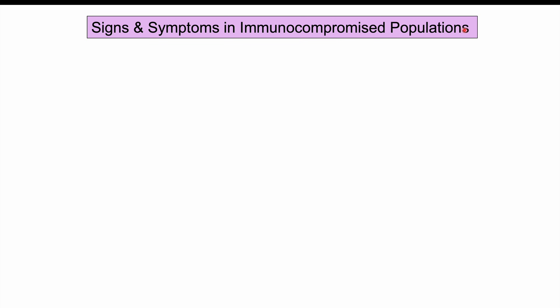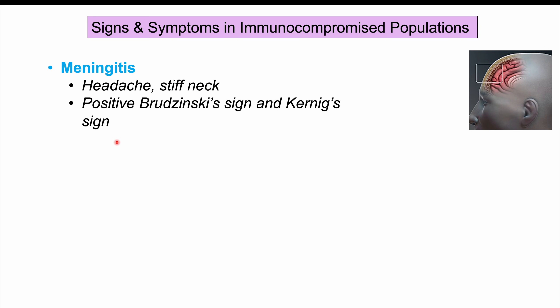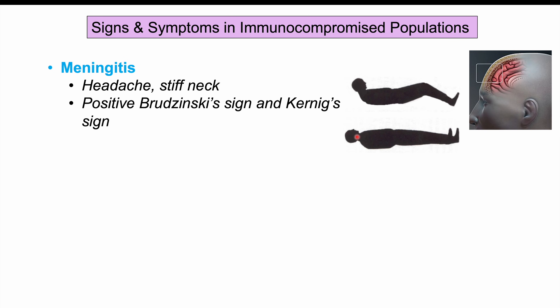In immunocompromised patients — including those with HIV/AIDS, on immunosuppressive medications, at extremes of age, or with diabetes — all related to suppressed T-cell immunity, Listeria can cause meningitis. Signs include headache and stiff neck, positive Brudzinski sign (flexing the neck causes reflex hip and knee flexion), and positive Kernig sign (with hip and knee flexed, extending the knee causes pain).